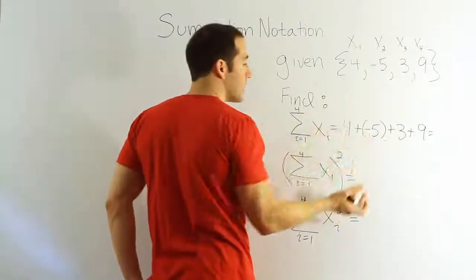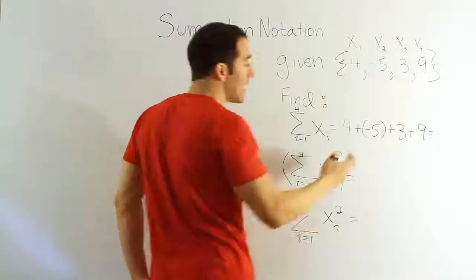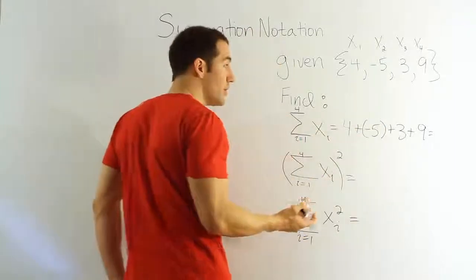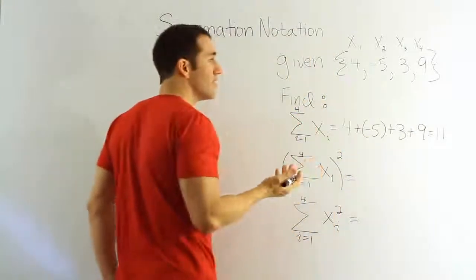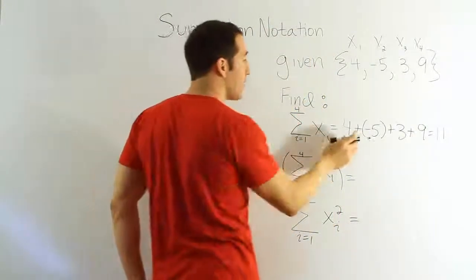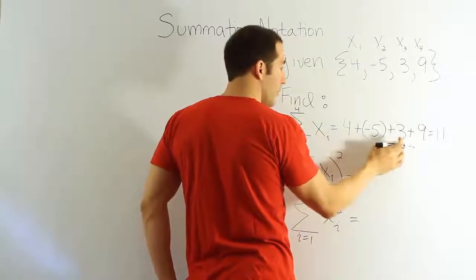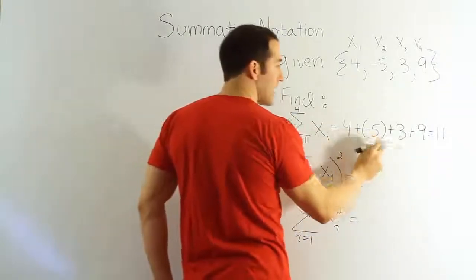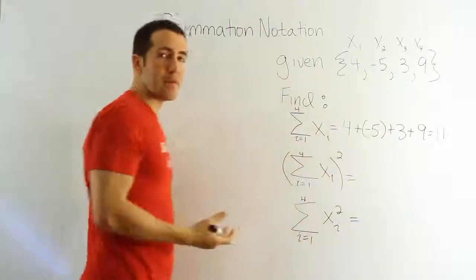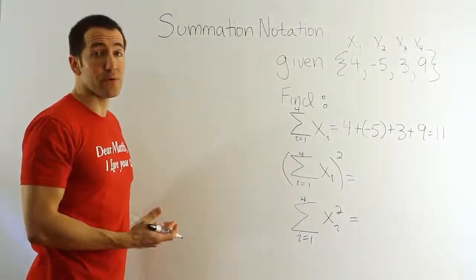So, if we do that, we say 4 plus negative 5 is negative 1. Negative 1 plus 3 is 2. And 2 plus 9 is 11. If we wanted to check that, we could add up the positive numbers first. 4 and 3 makes 7. Plus 9 makes 16. 16 take away 5 is 11. Remember, if you're adding, you can do addition in any order.